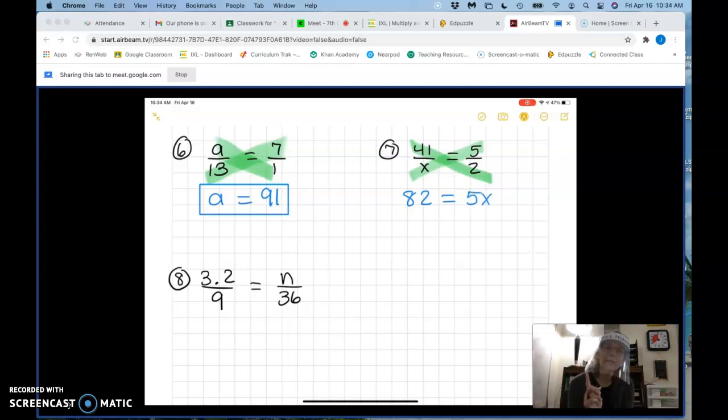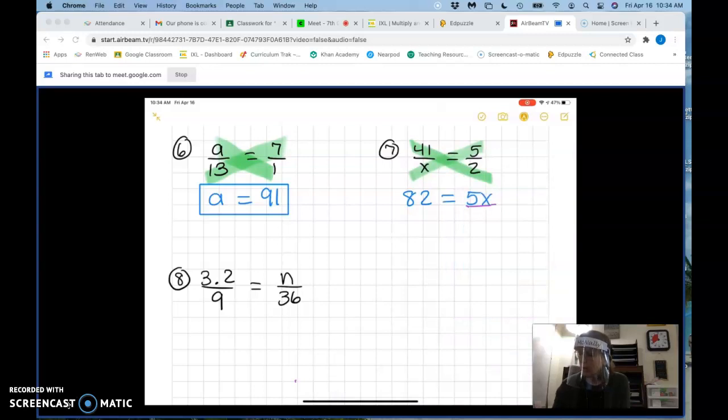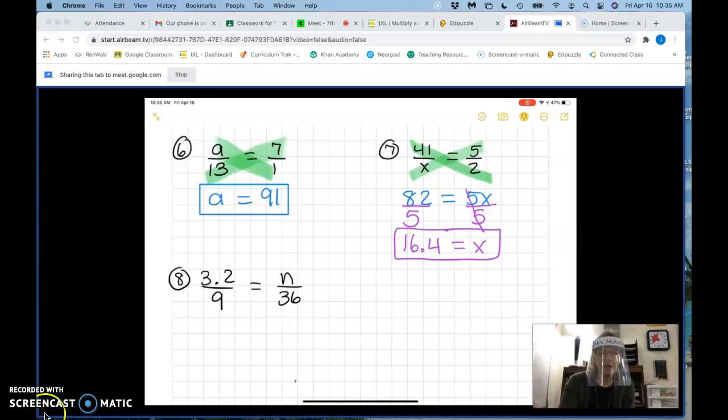Now how do I get x alone? What do I have to do? You do the line and put it under. What do I put underneath? Five. Good job, Cameron. And whatever I do to one side, I have to do to the other. And what is 82 divided by five? 16.4 equals x.